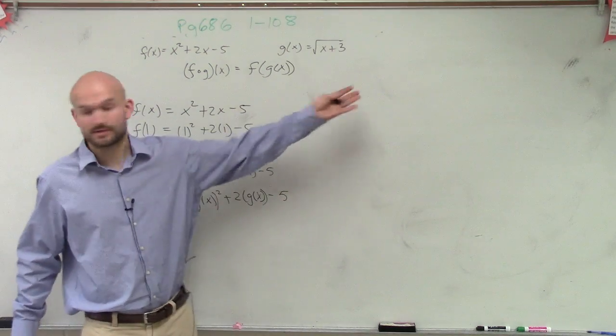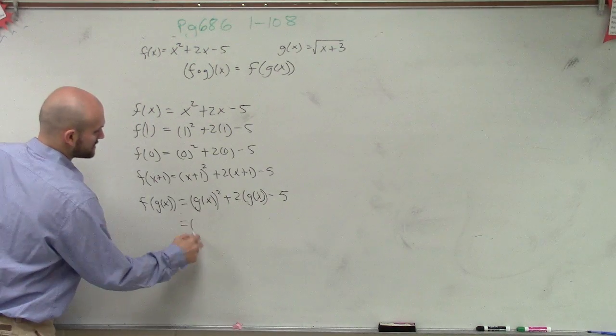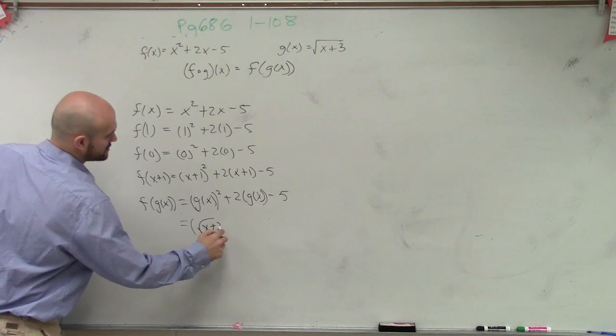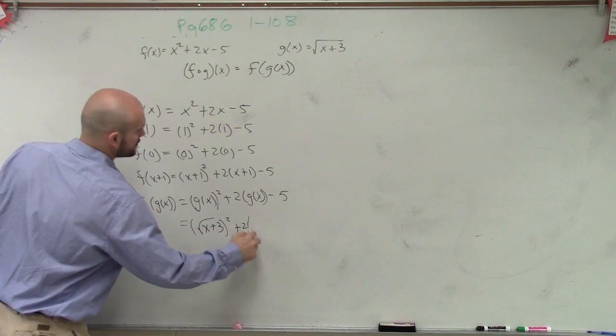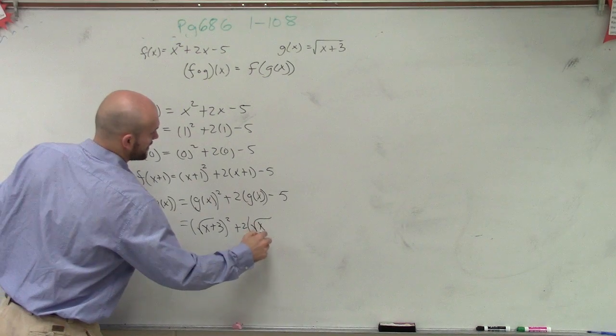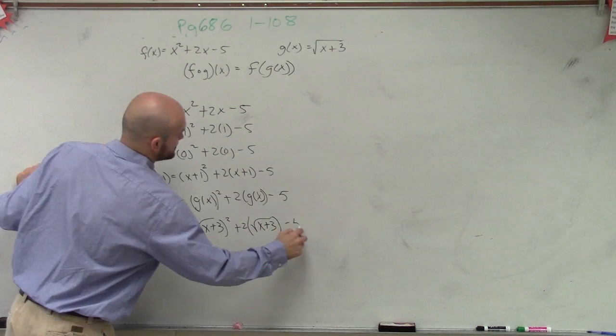Square root of x plus 3, right? So therefore, I write the square root of x plus 3 squared plus 2 times the square root of x plus 3 minus 5.